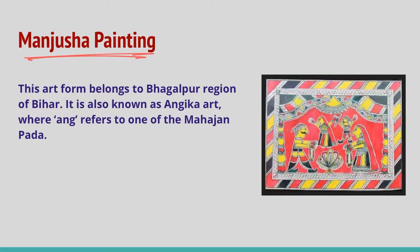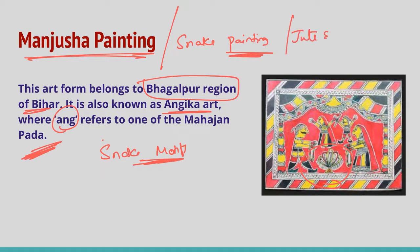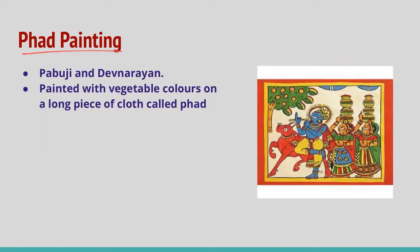Manjusha painting is an art form that belongs to the Bhagalpur region of Bihar, also known as Angika art, where 'Ang' refers to one of the Mahajanapadas. Since snake motifs are always present, it is also called snake painting. These paintings are executed on boxes of jute and paper. Pad painting is predominantly found in Rajasthan and is a scroll-type art.